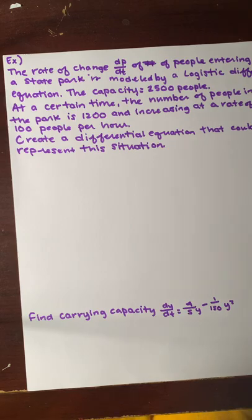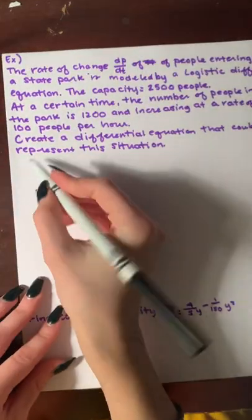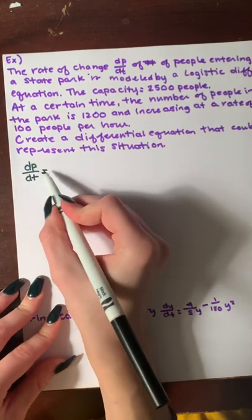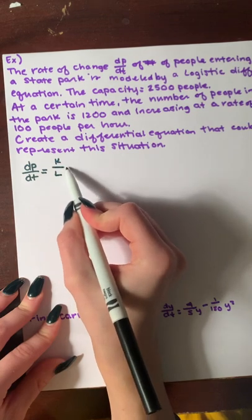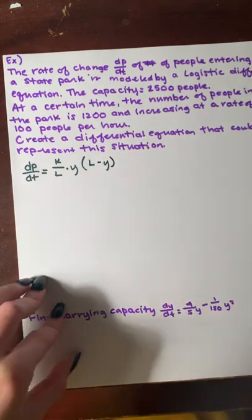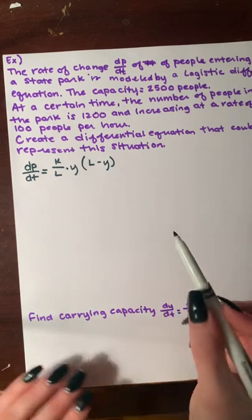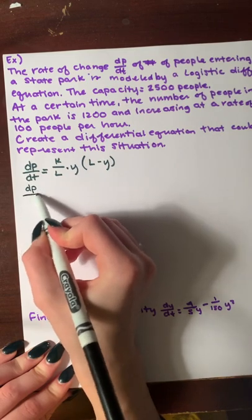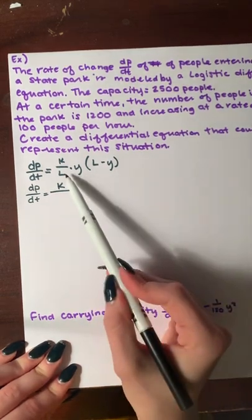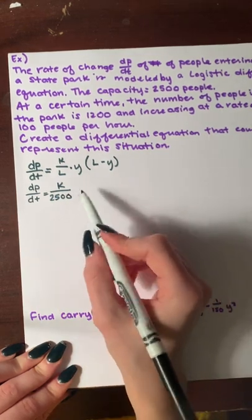So, we are going to use one of the models right here. We'll use DP over DT equals K over L times Y over L minus Y. And the L is the same thing as the M in the previous paper. So, then we will fill in our blanks. We have DP over DT equals K, which is our unknown. And our L represents our carrying capacity. In this case, it is 2,500 times P.